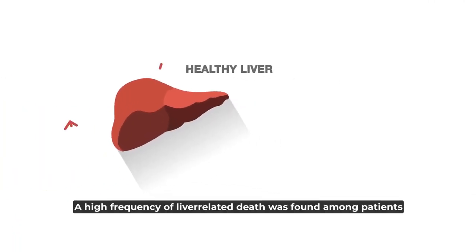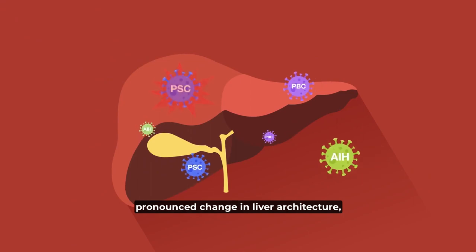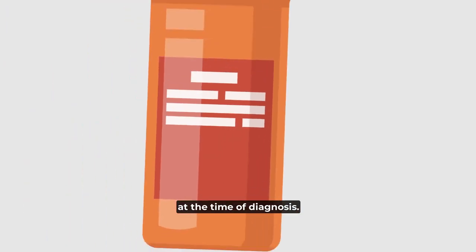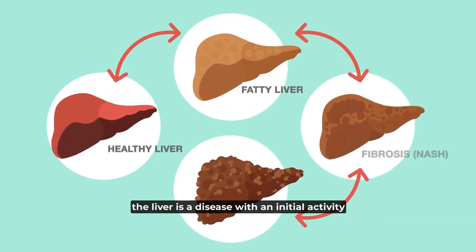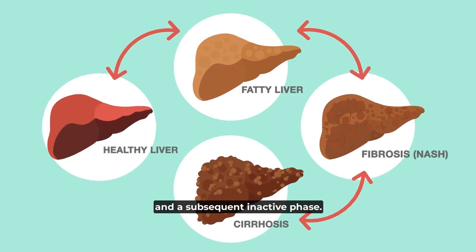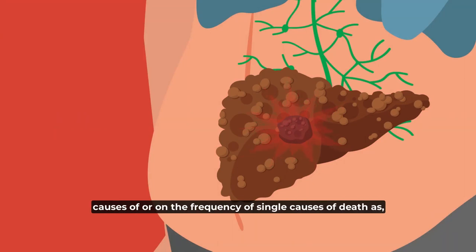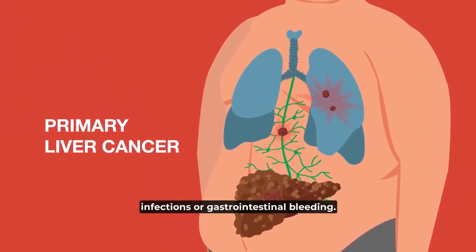A high frequency of liver-related death was found among patients with a short observation time, high biochemical activity, pronounced change in liver architecture, ascites, and other signs of a poor prognosis at the time of diagnosis. The findings favored the hypothesis that cirrhosis of the liver is a disease with an initial active phase and a subsequent inactive phase. Half of the patients were treated with prednisone, but this had no detectable influence on the distribution or frequency of causes of death such as infections or gastrointestinal bleeding.